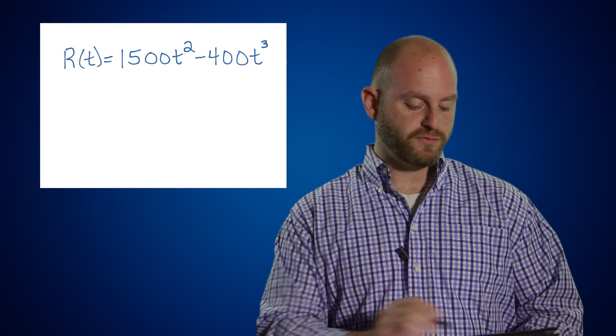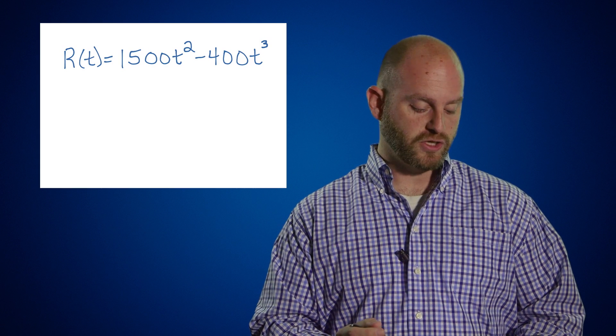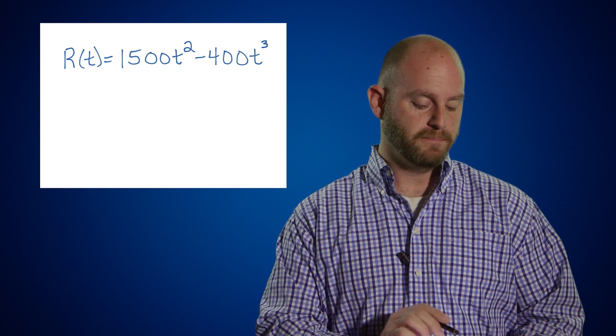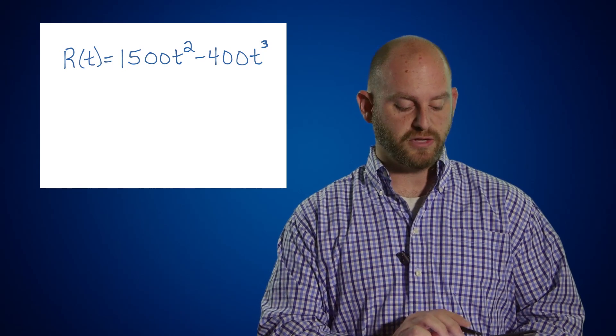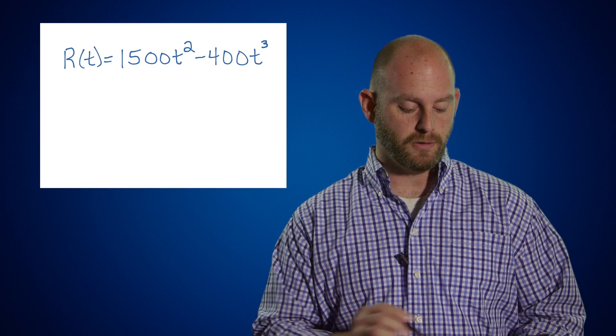We want to figure out how fast people are entering our concert hall to make sure we have enough employees working to get the people in quickly and efficiently so that everyone's ready when the show begins. We take this equation and call it R of t, which stands for the rate of change of people entering our concert hall.